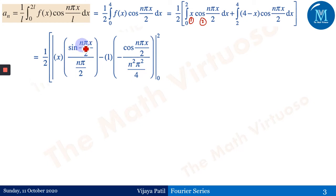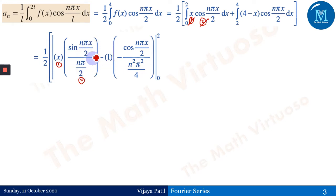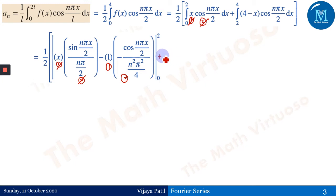Integration of the second function gives sin(nπx/2) divided by (nπ/2). Then differentiating the first gives 1 and integrating the second gives −cos(nπx/2) divided by (nπ/2), so it becomes n²π²/4. Differentiating again gives 0 so we stop. Then putting the upper and lower limits, we do the same for the second integral with (4−x), where differentiating (4−x) gives −1.